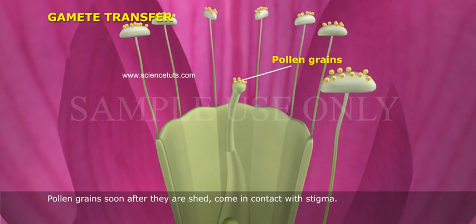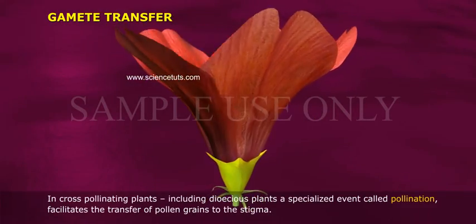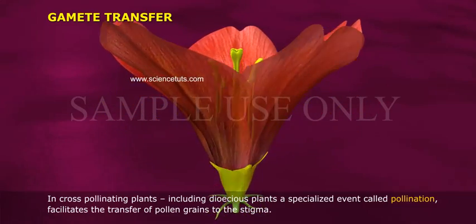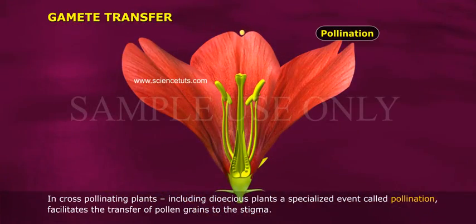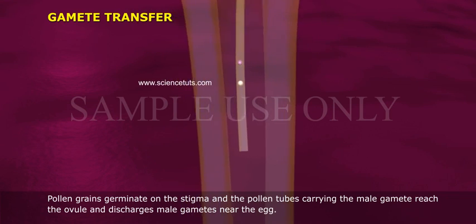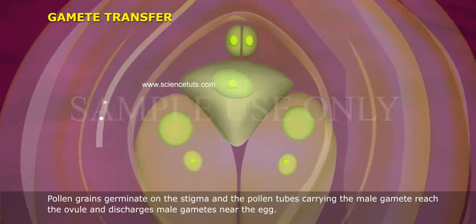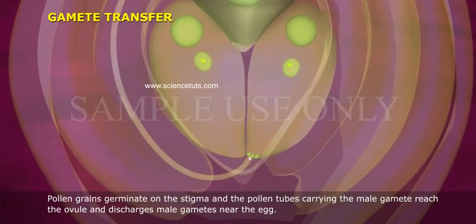Pollen grains, soon after they are shed, come in contact with the stigma. In cross-pollinating plants, including dioecious plants, a specialized event called pollination facilitates the transfer of pollen grains to the stigma. Pollen grains germinate on the stigma and the pollen tubes carrying the male gamete reach the ovule and discharge male gametes near the egg.